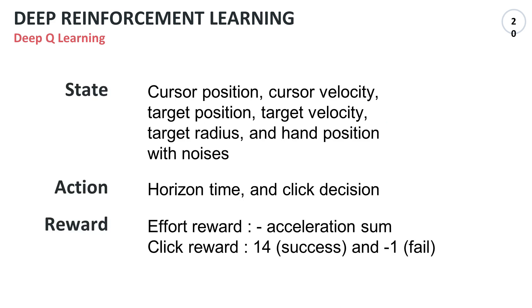For the learning, the model is formulated as a Markov decision process. We set the state as the information of the cursor, target, and hand with the noises. For minimizing acceleration of the hand and success to click, the network optimized the prediction horizon time and click decision.